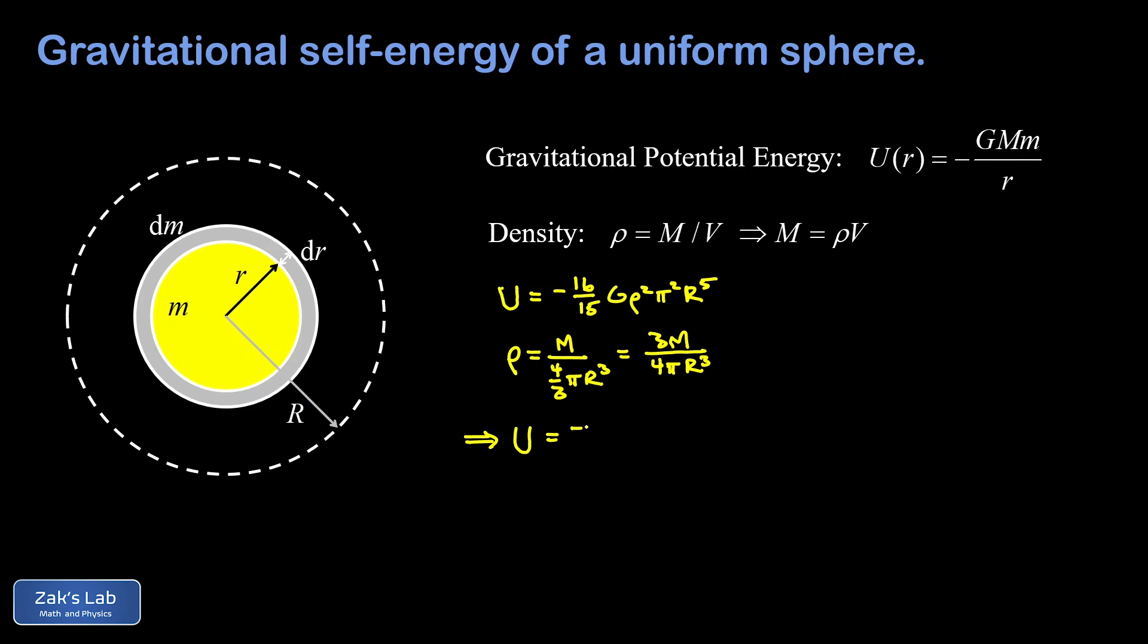So we'll sub that into our expression for the total gravitational self energy of the sphere, replacing rho with three M over four pi big R cubed. Remember that's going to be squared. We get an expression like that, and then we just need to clean this up. When I square that expression three M over four pi r cubed, I'm going to end up with a 16 for my constant there, and that should cancel my 16 right there.